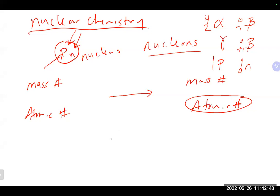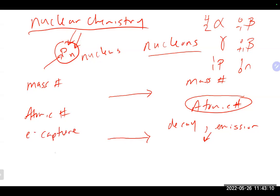If something is going through some type of decay with a particle being released, or some type of emission, those particles will be on the product side. Any type of electron capture, or if you bombard something with a neutron, those particles would end up on the reactant side. Unlike a traditional chemical reaction, which involves breaking and making bonds through electrons, nuclear reactions involve the nucleus rather than electrons.